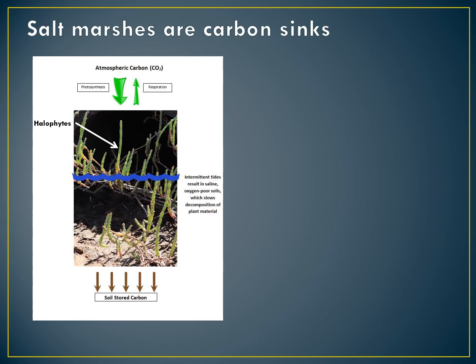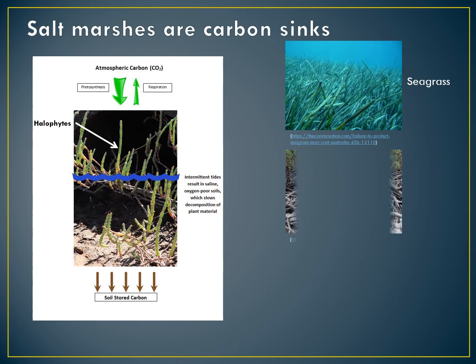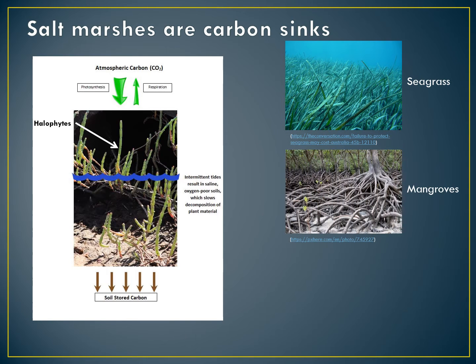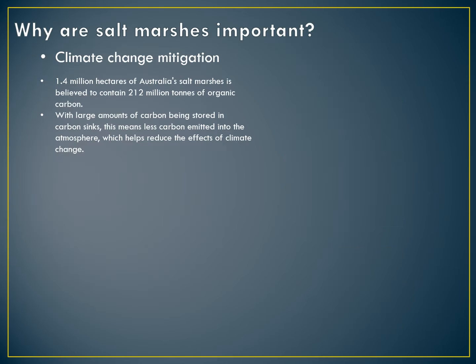Other blue carbon examples are seagrass meadows and mangroves. Salt marshes are believed to be one of the earth's most efficient carbon sinks and can store up to 55 times the carbon of tropical rainforests. They can also store their carbon in the soil for thousands of years if left undisturbed.